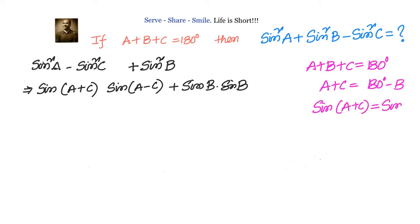We'll have sin(A+C) is sin(180-θ), that will be second quadrant so it will be positive sinB. So wherever sin(A+C) is there we can write down sinB, and wherever sinB is there we can write down sin(A+C).